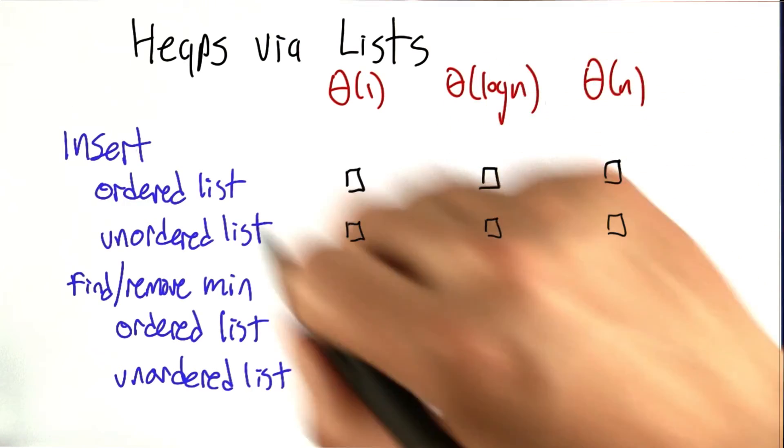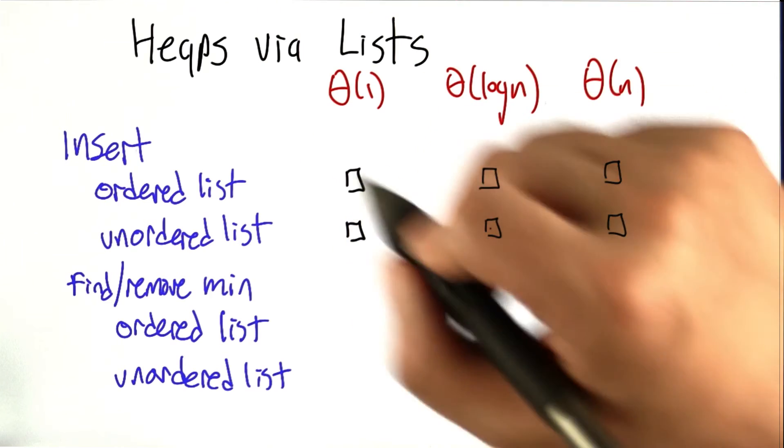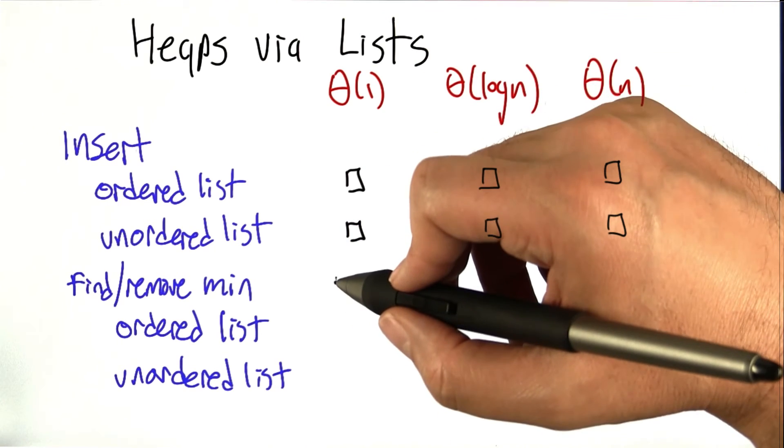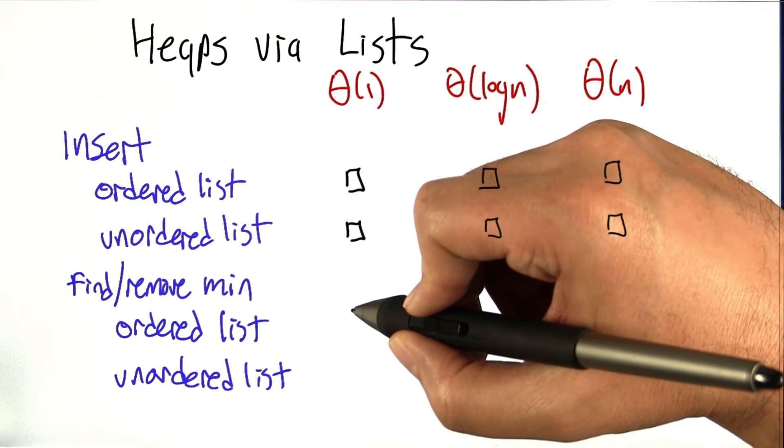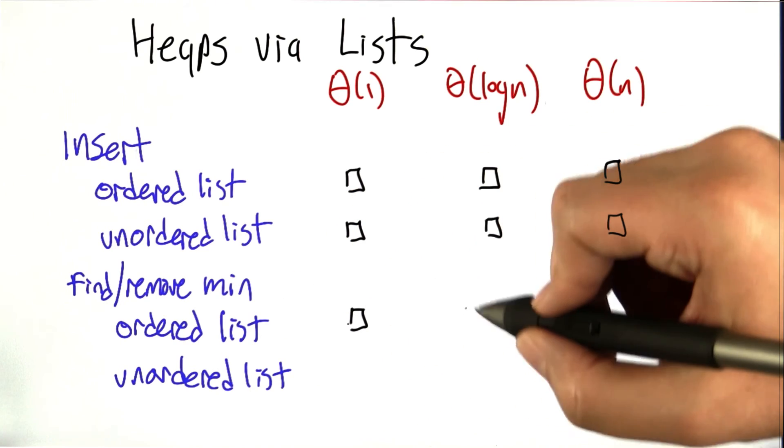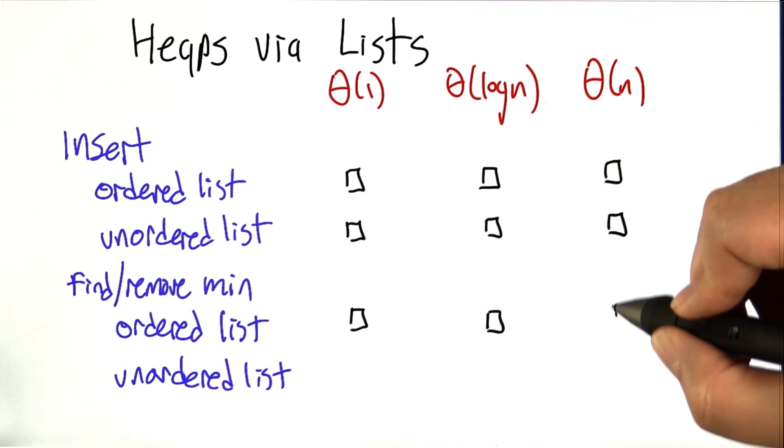And finally, now that you've done that, we've inserted a bunch of elements into the list, and there's n in there now, and we want to ask the question, how long does it take to find and remove the minimum from an ordered list? Is it constant, log, or linear?